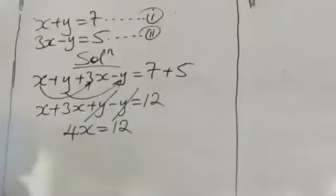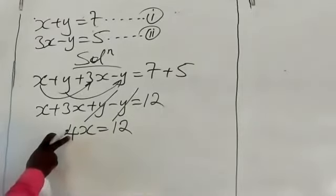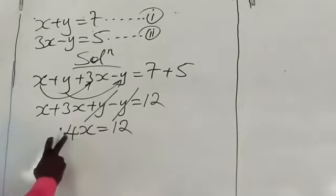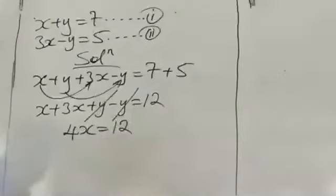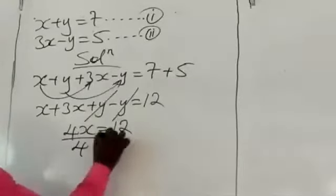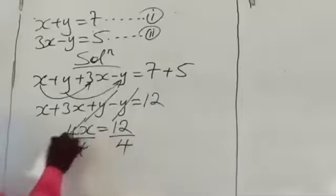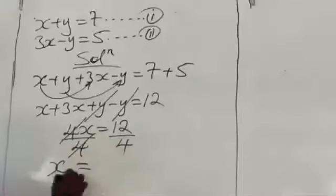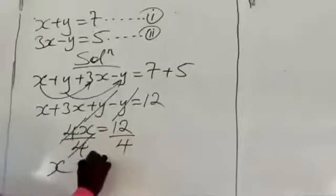So x plus 3x equals 4x, and 4x equals 12. To find the value of x, we divide both sides by the coefficient of x, which is 4. The coefficient is the number in front of the letter. So 4 and 4 cancel on the left-hand side, and x equals 12 divided by 4, which is 3.